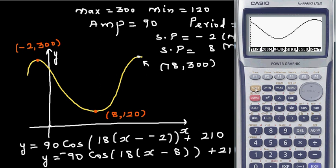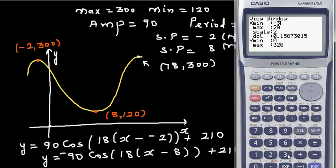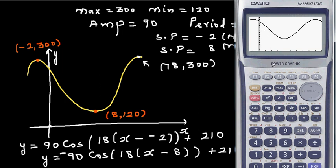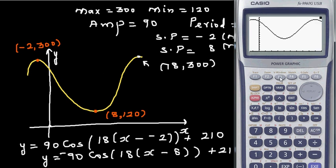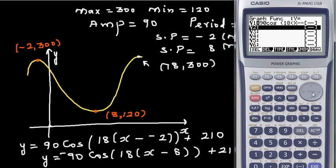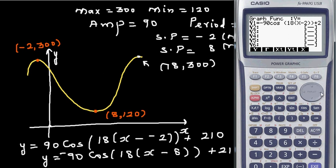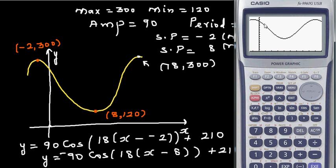The maximum should appear at (−2, 300). The next maximum is at (18, 300), and G-Solve minimum gives (8, 120). Then change to −90 cosine with starting point 8 and verify you get the same graph — G-Solve maximum at (−2, 300) and minimum confirmed.